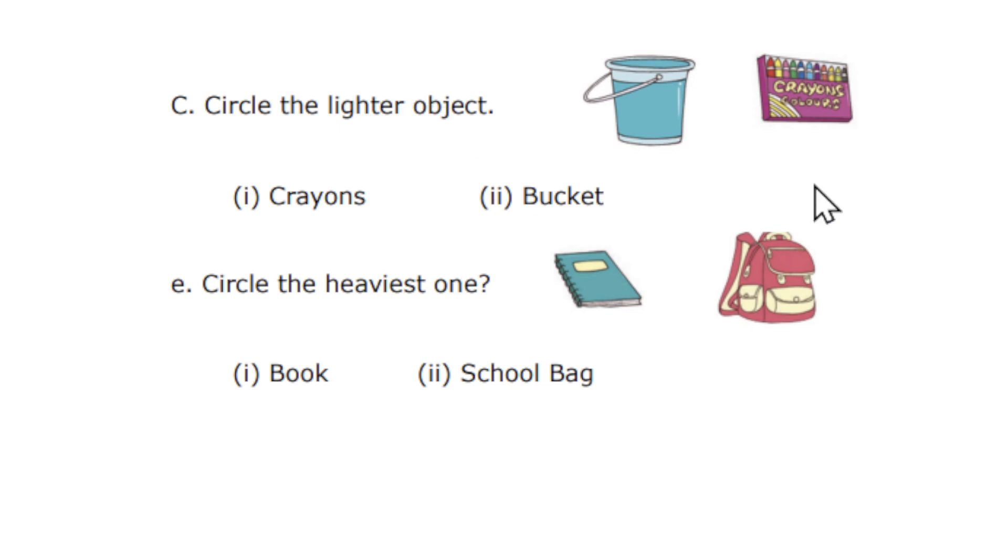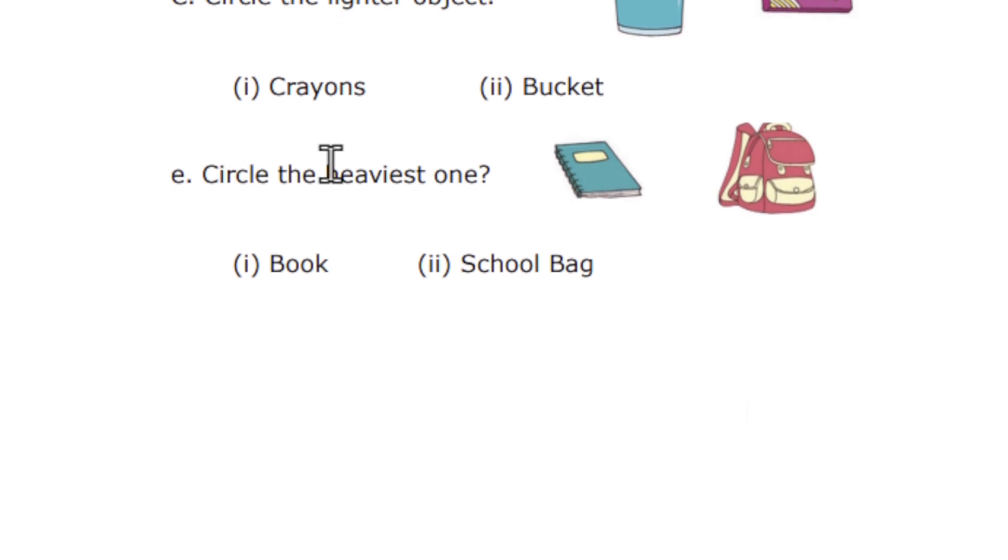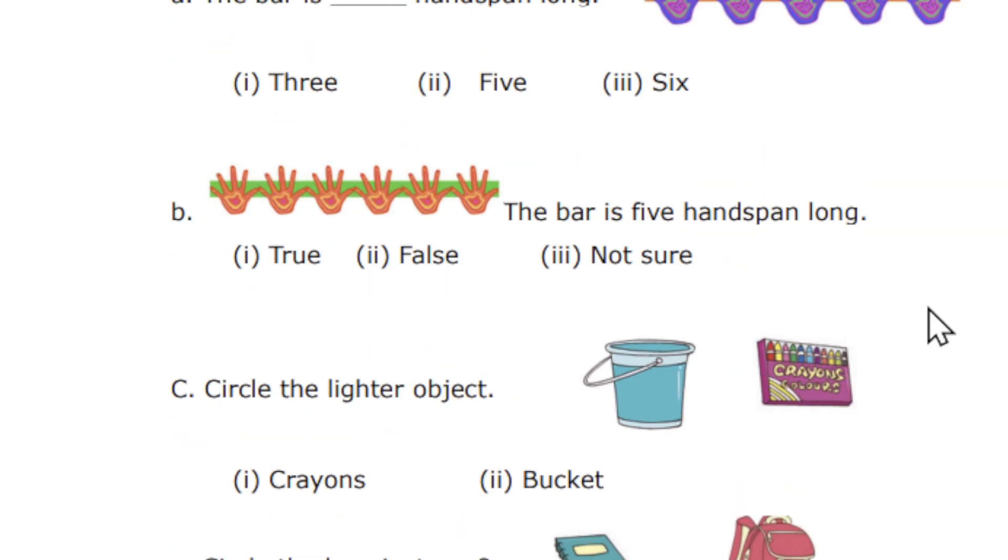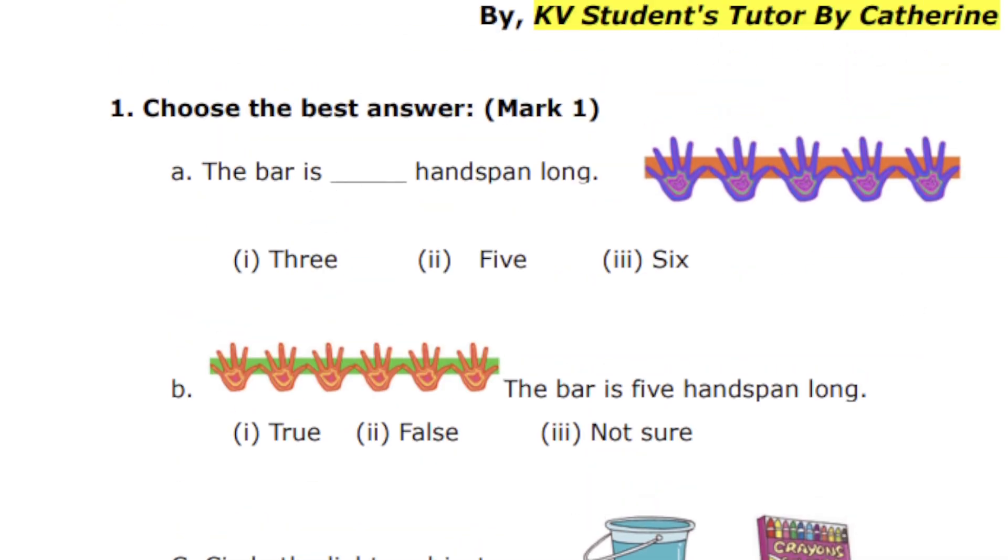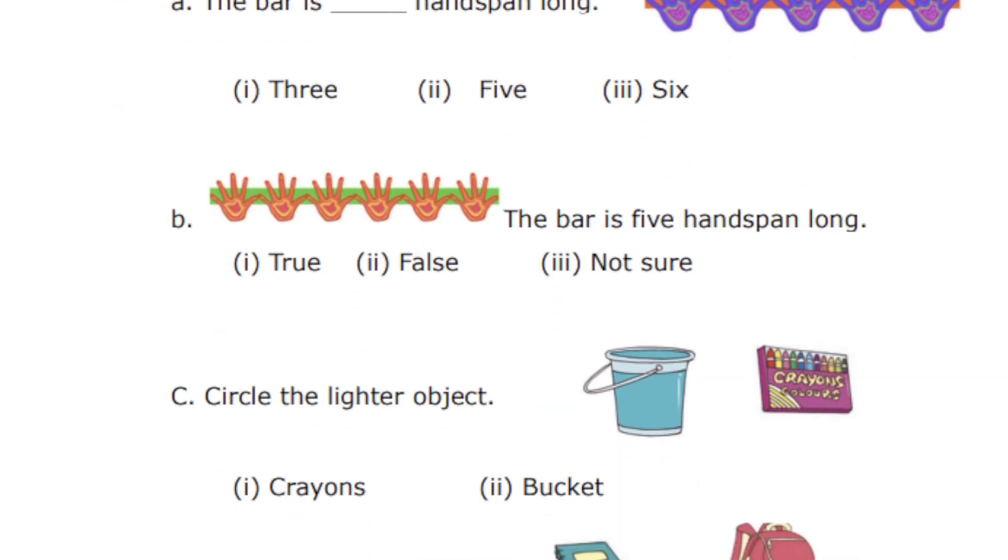The next is circle the lighter object and circle the heaviest one. So all these questions carry 1 mark. So 4 questions, you will be scoring 4 marks.